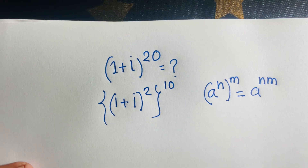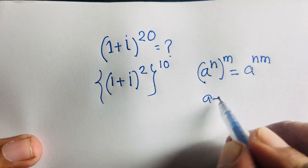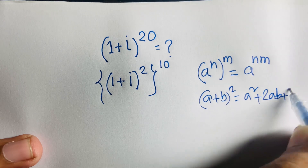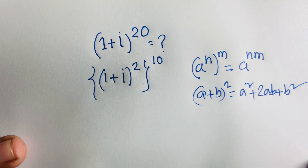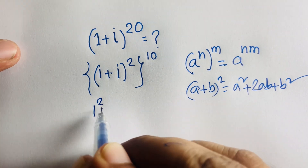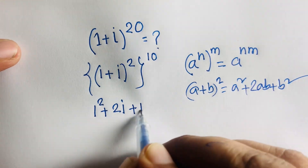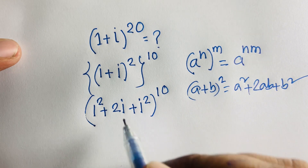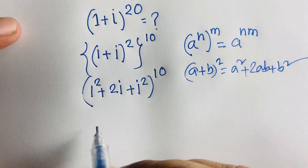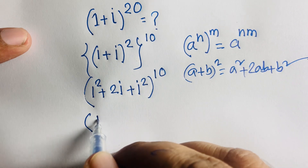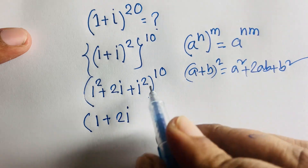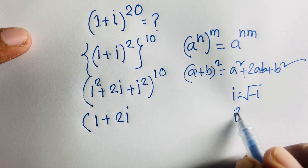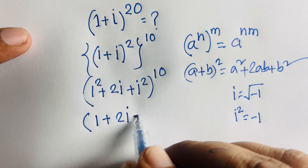We know that (a + b)^2 = a^2 + 2ab + b^2. Applying this, (1 + i)^2 = 1^2 + 2i + i^2. Since i = √(-1), i^2 = -1, so this becomes 1 + 2i - 1.